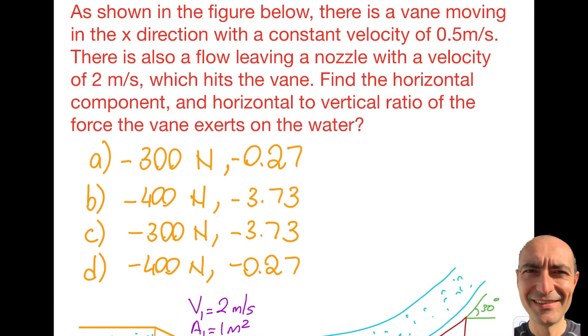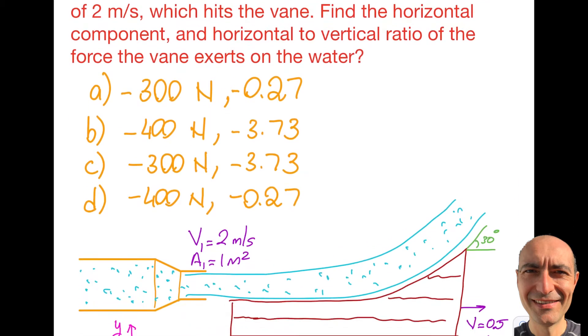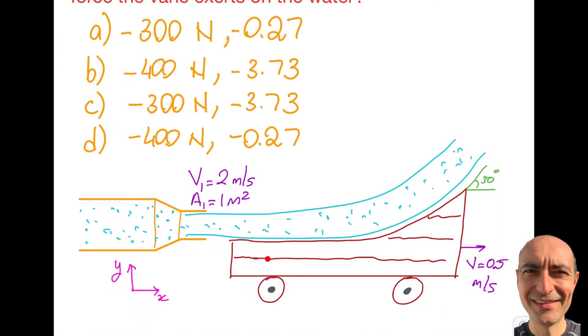Hello everybody, welcome to a new segment. I'm going to solve another question that is quite common in an FE exam environment. I have a vane moving to the right at 0.5 meters per second - that's a constant value that's given.